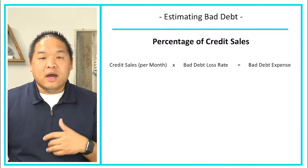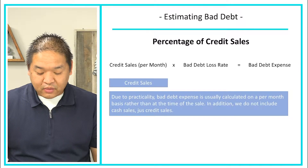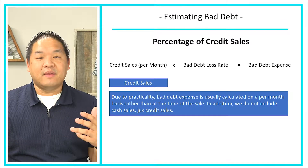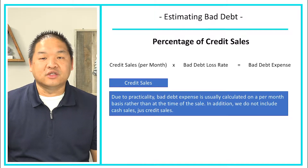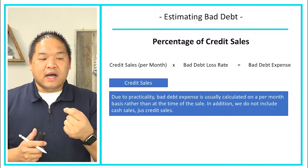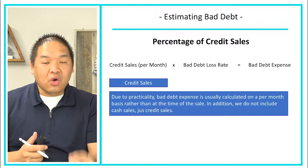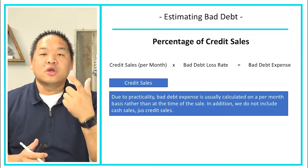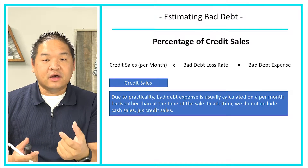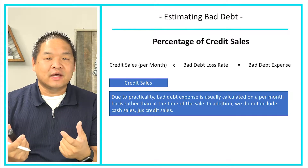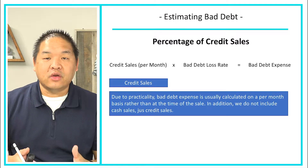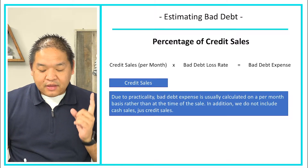Due to practicality, bad debt expense is usually calculated on a per-month basis rather than at the time of sale. We do not include cash sales — just credit sales. In a problem, they might give you total sales including both cash and credit sales, so you'll need to back out just the credit sales when calculating bad debt expense.